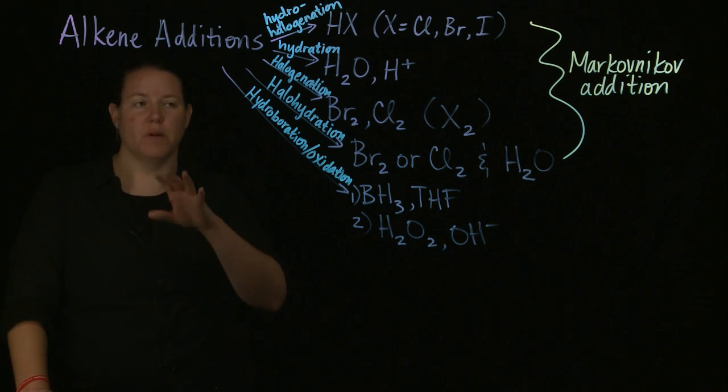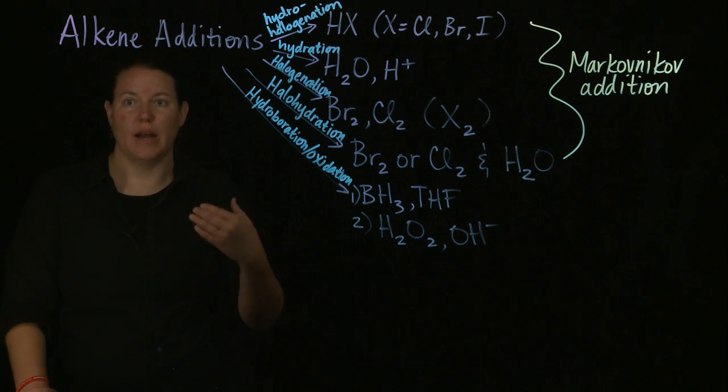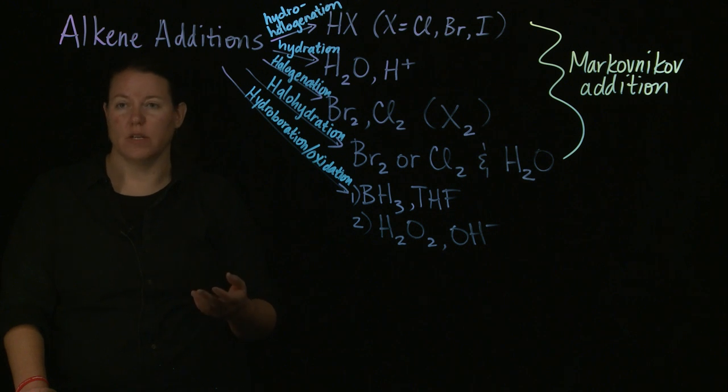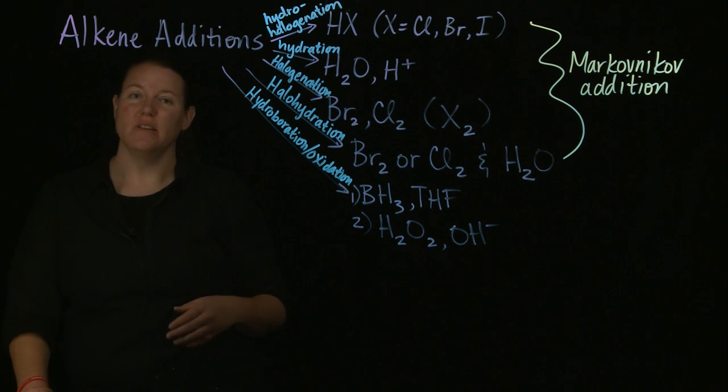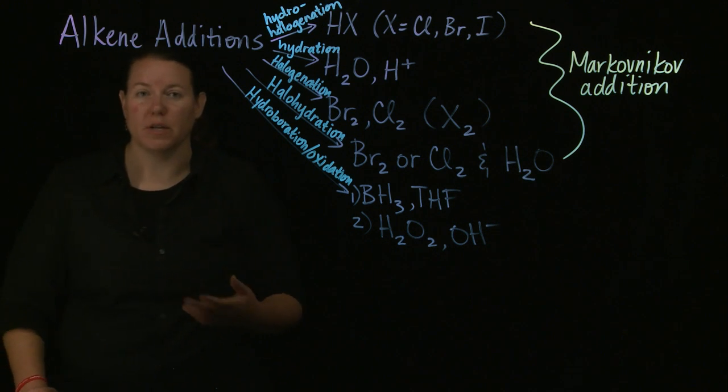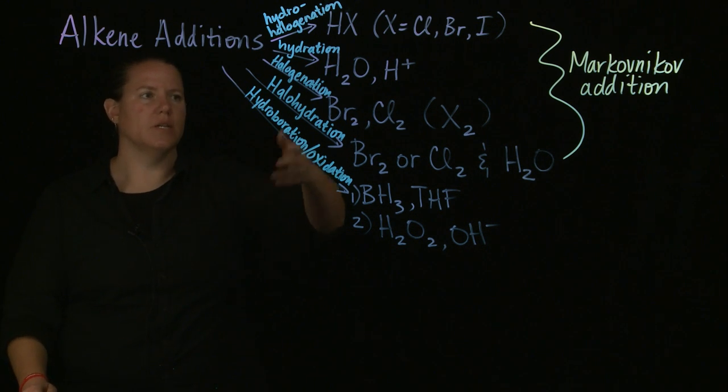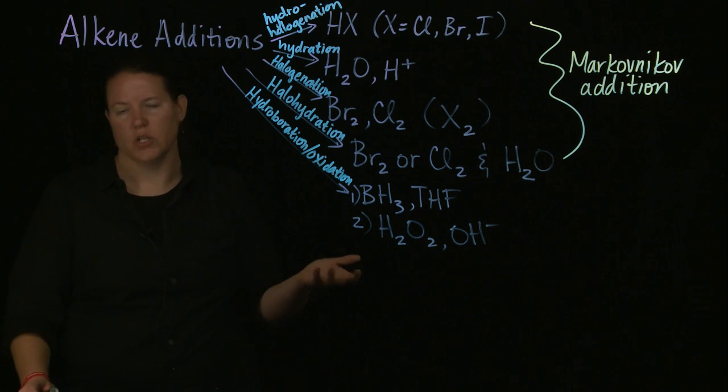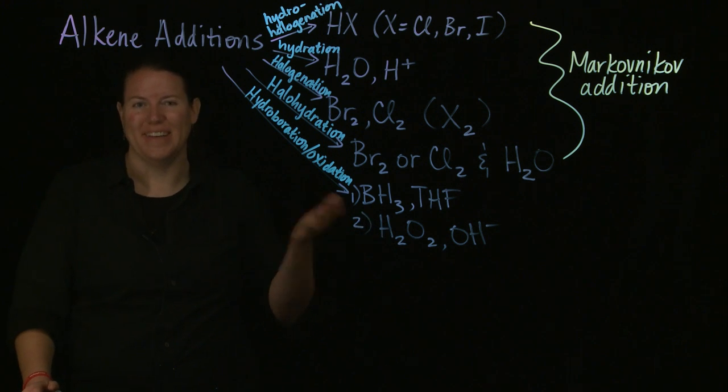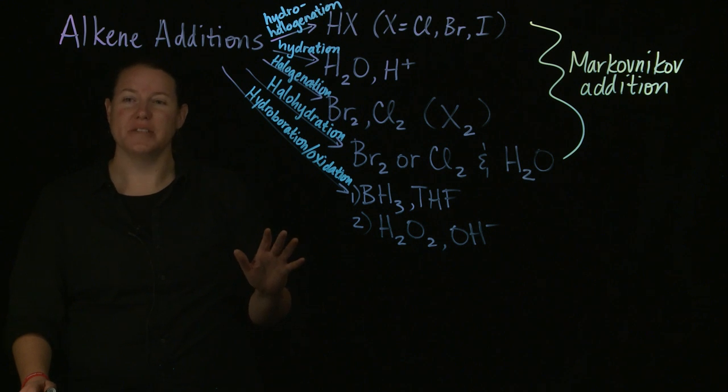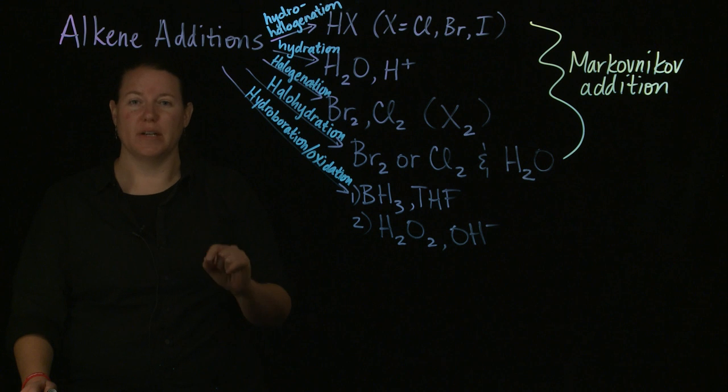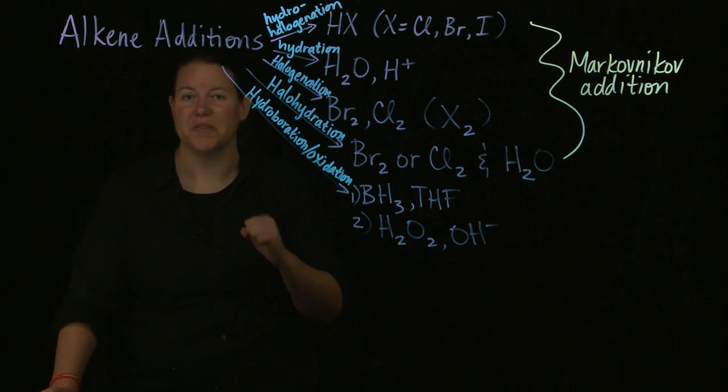Not included in these but certainly could be included are things like oxidations and reductions. Reductions would be adding H2 to some kind of alkene and oxidations would be something like adding O's or halogens to an alkene. Sometimes those are specified in their own classes so epoxidation and ozonolysis are both considered oxidations. I'm not going to do any reductions, epoxidation, or ozonolysis in this video.